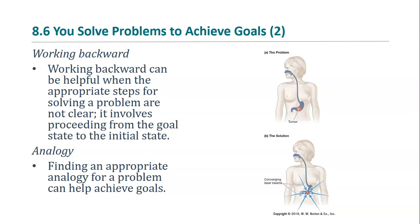Another approach is to find an analogy. A surgeon needed to remove a tumor from a patient's stomach using laser beams, but the laser beams would destroy any tissue they passed through. She remembered a story about a general attacking a fort from multiple areas with only part of his troops — the combined effects caused the fortress to fall. As an analogy, she used multiple laser beams converged on the tumor, so as not to destroy the surrounding tissue but to combine all forces on the tumor itself.